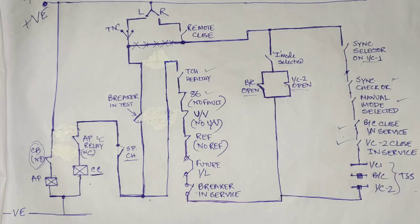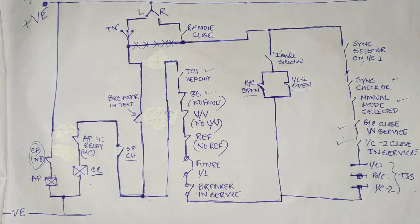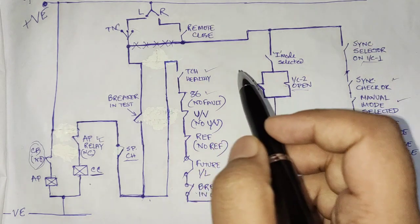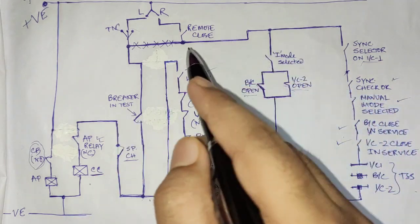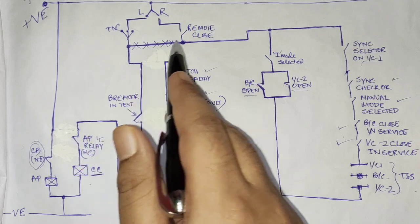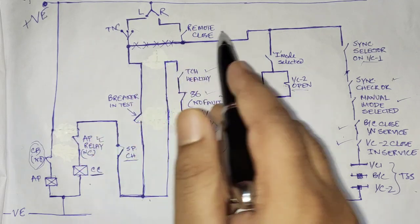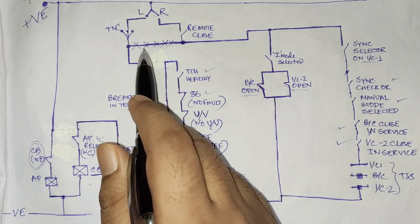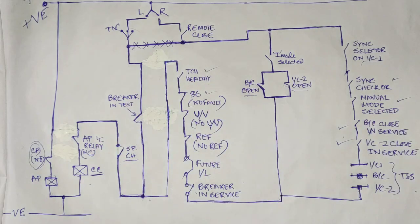Welcome back to Electrical Technology and Industrial Practice. In continuation with the previous video, we showed the control logic diagram of closing Incomer 1 of the one-to-one Incomer Bus Coupler scheme. In this video we will be discussing the actual control circuit of Incomer 1. I have made a connection here and cross-marked it, which I will explain later — for now consider those as connected.